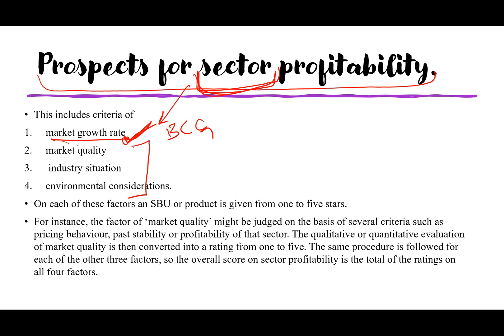When sector profitability is unattractive and competitive capabilities are average, the strategy is again 'Phased Withdrawal.' The sector is not providing enough opportunities and the organization only has mild strengths — generating just survival-level, break-even cash. Investment should be slowly withdrawn from this SBU or product line in a gradual, phased manner.